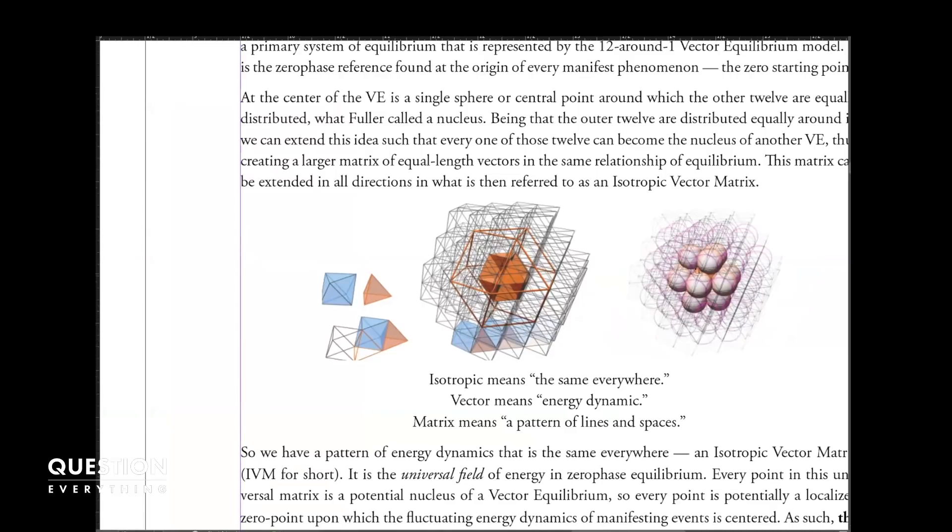He decided spheres represent the kind of equilibrium of energy fields coming together and interacting. When you pack spheres together that are tangential to each other, you derive this exact same geometry that you see over here. You connect all the center points of those spheres to create this vector equilibrium state, and then you extend that out into a whole matrix field. That gives you the isotropic vector matrix.